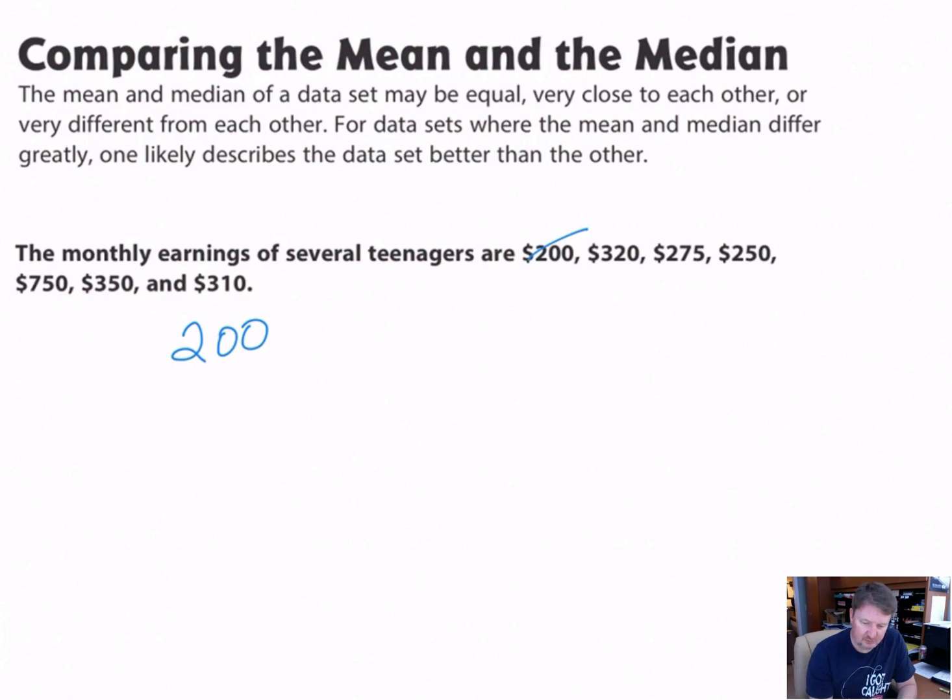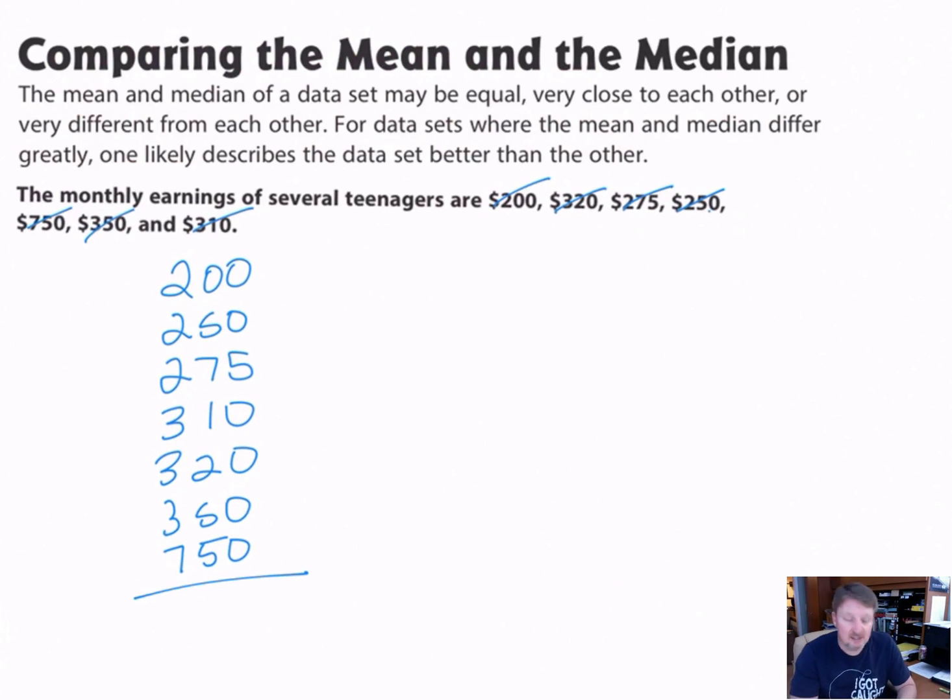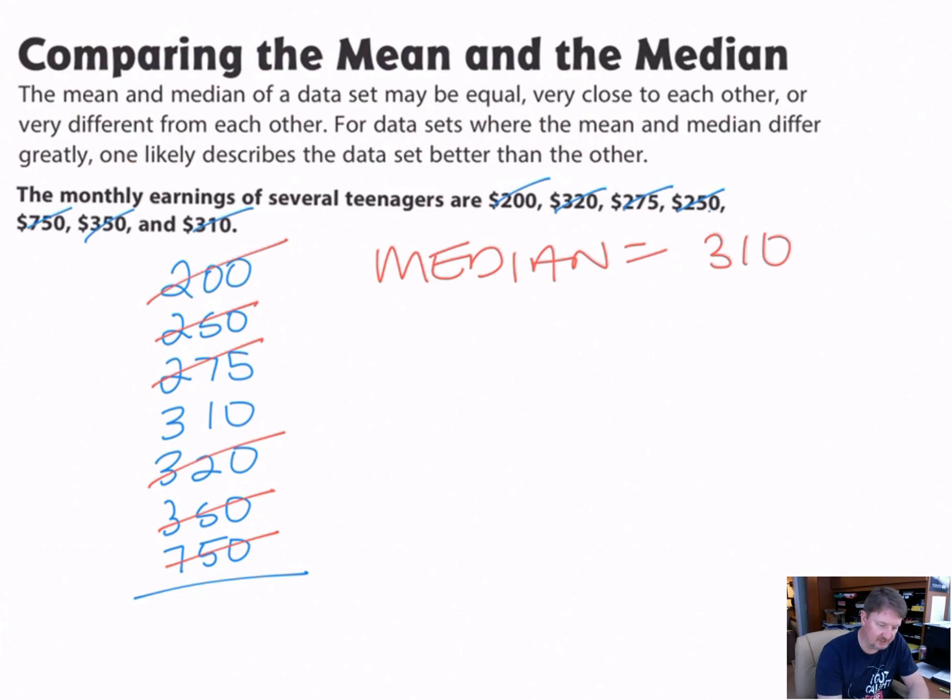When you're finding the mean and median, it's a good idea to put them in order and stack them like you're going to add them. Here I'm ordering them from least to greatest starting at the top and scratching them out of my list so I know I get all my numbers in there. Now I got them in order so I can easily find the median. Let me do that first because that's usually the easiest thing. Cross this out, cross that out—the median is $310.